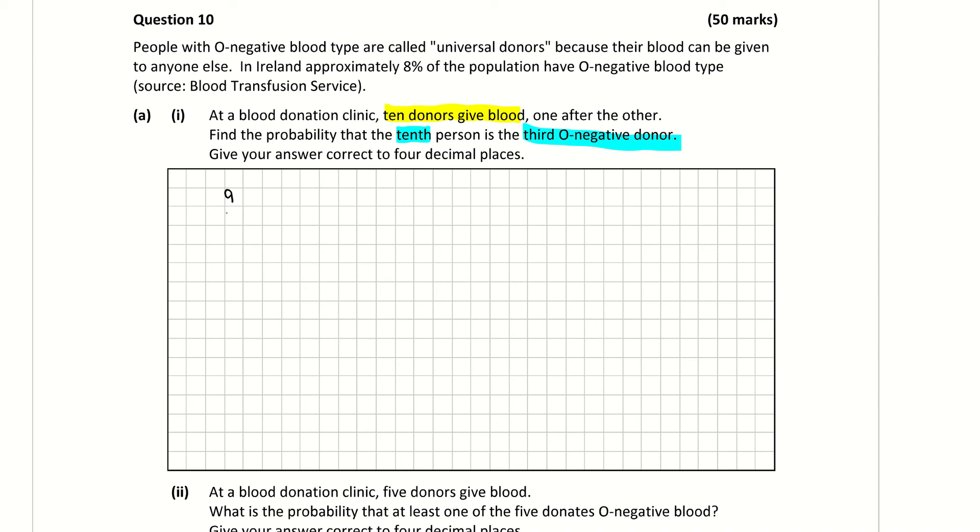But of those 9, 2 of them must be O negative. And the probability of getting an O negative person is 8%, which is 8 out of 100 or 0.08, whatever way you want to write it. And 2 of them are O negative.